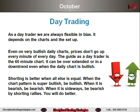As a day trader, we are always flexible and biased — it depends on the charts and the setup. Even on very bullish daily charts, prices don't go up every minute of every day. The guide as a day trader is a 60-minute chart. It can be overextended or in a downtrend, even when the daily chart is bullish. Shorting is better when all else is equal. When the daily chart pattern is super bullish, be bullish. When it is bearish, be bearish. And when it is sideways, be bearish — by shorting rallies, you will do better.